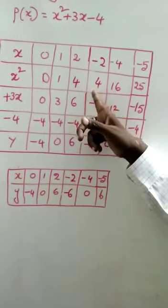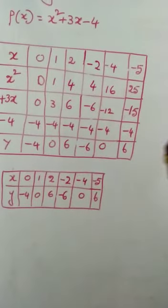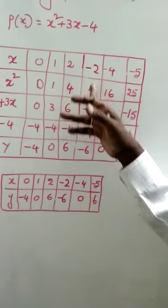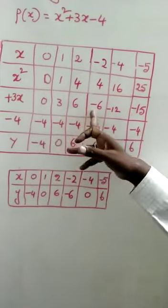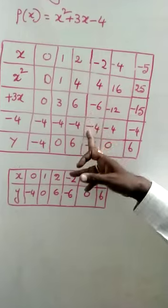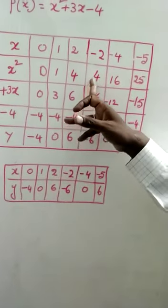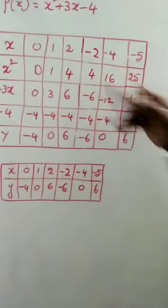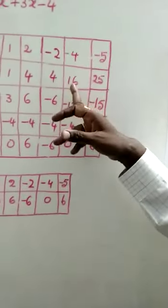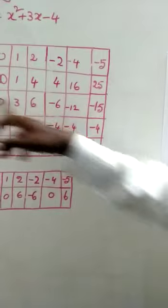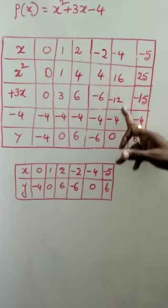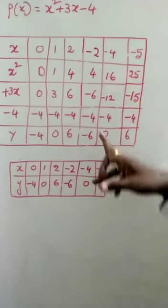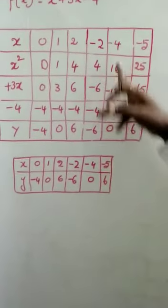For x equals minus 2: minus 2 squared is 4, 3 times minus 2 is minus 6, minus 4, so 4 minus 6 minus 4 gives P(minus 2) equals minus 6. For x equals minus 4: minus 4 squared is 16, 3 times minus 4 is minus 12, minus 4, so 16 minus 12 minus 4 gives P(minus 4) equals 0.